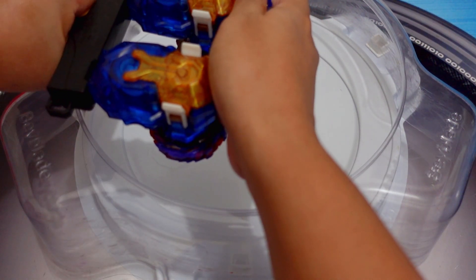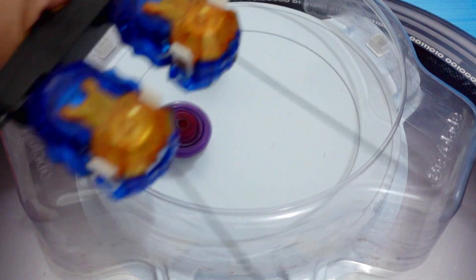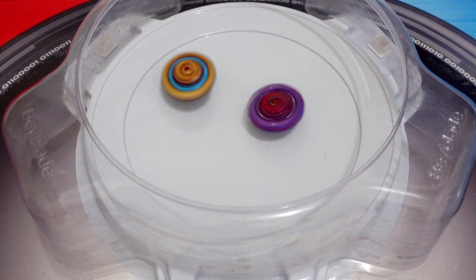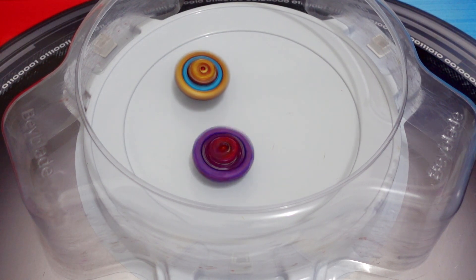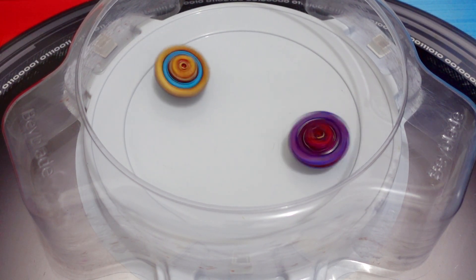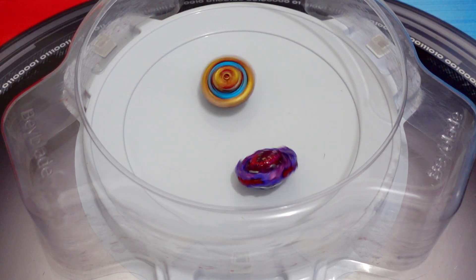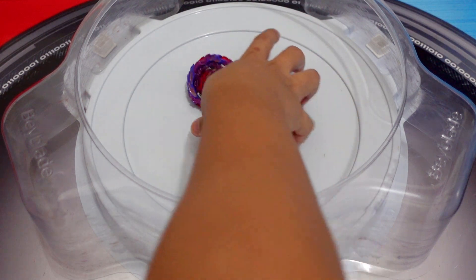B-190 Roar Bamut versus Astral Spriggan left spin. 3-2-1, go. Nice hit. Winner is Astral Spriggan left spin.